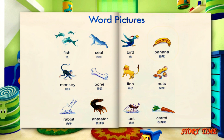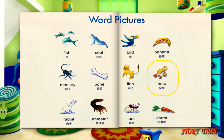Picture five: monkey. Picture six: bone. Picture seven: lion. Picture eight: nuts. Picture nine: rabbit.